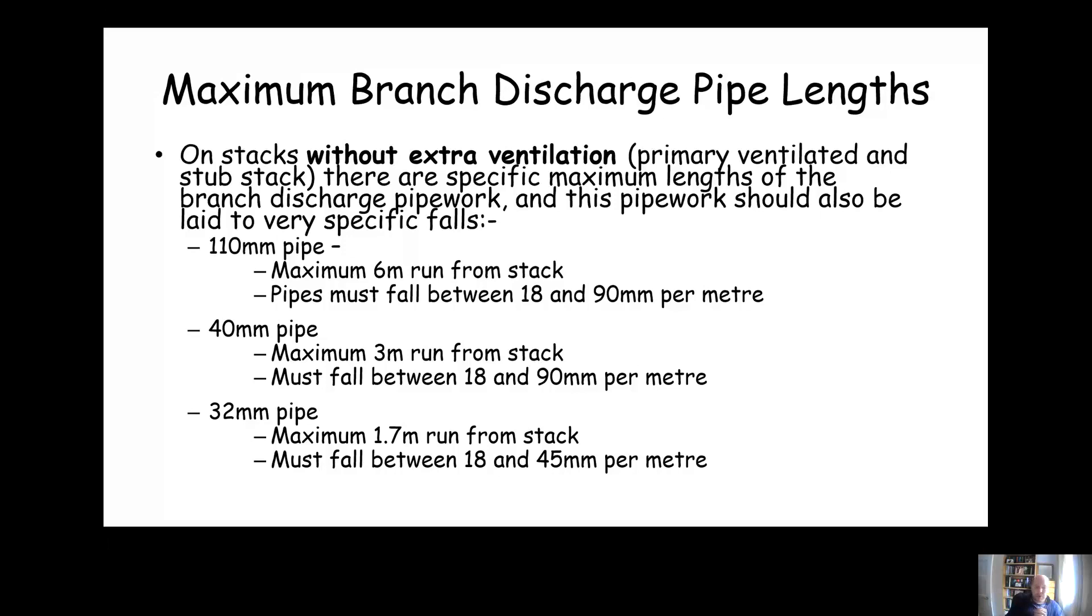It's more likely to discharge at full bore, especially if it's a steeper slant. So what we want to do, particularly with a smaller pipe like 32 millimeter, is keep it at a very shallow angle so it's less likely to discharge at full bore, and when it discharges at full bore, that's when we're most at risk from trap seal loss.